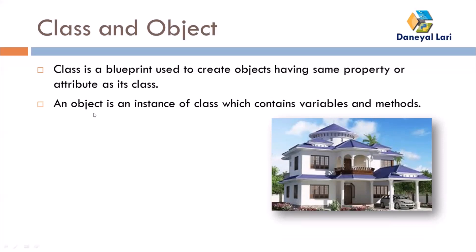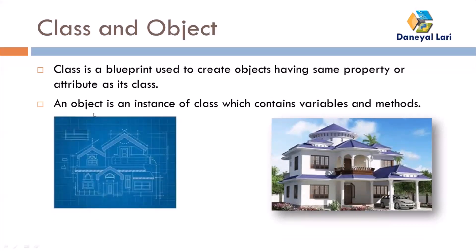First of all you will create a blueprint — this building will have these number of floors, each floor will have a number of rooms, where the entry point is, and so on. You design everything on paper. That is called the blueprint. But you cannot stay in the blueprint, because the blueprint is used to create a real building — a real object in the world. The building exists in reality; the blueprint exists only on paper.